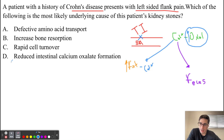The answer is choice D — reduced intestinal calcium-oxalate formation. Because calcium forms a complex with fat instead of oxalate, we have a reduction in intestinal calcium-oxalate formation.